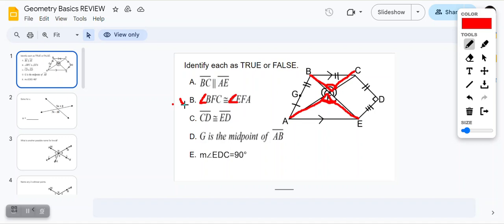All right? So A is true. B is true. Let's travel forward, shall we? C - CD is congruent to ED. CD.